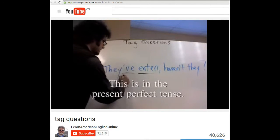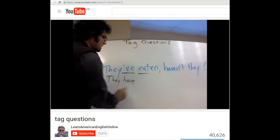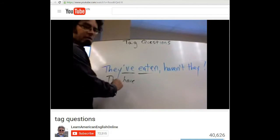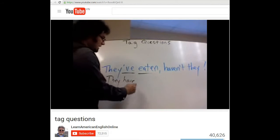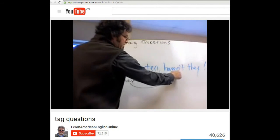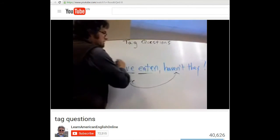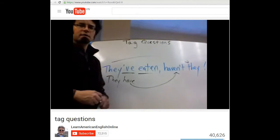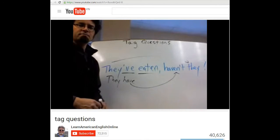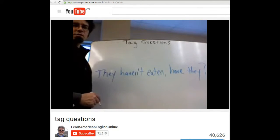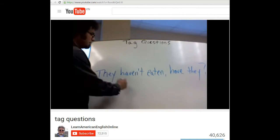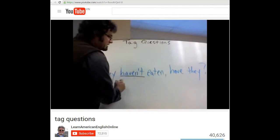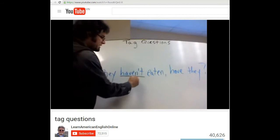They've eaten, haven't they? This contraction is they have. So at the end of the question, have is repeated, it's negative, and the subject is also repeated. They've eaten, haven't they? It's also possible to begin with the negative. They haven't eaten, have they? This is negative.